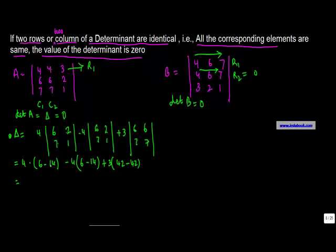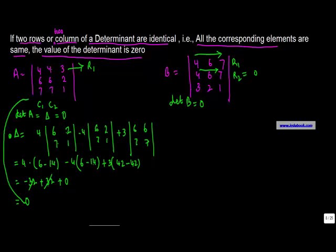Computing: (6−14) = −8, so −8×4 = −32. Then −(6−14) = −(−8), so −8×(−4) = +32. And (42−42) = 0, so 0×3 = 0. The total is −32 + 32 + 0 = 0. Hence the property is verified: if any two columns of a determinant are the same, the value of the determinant is equal to zero.